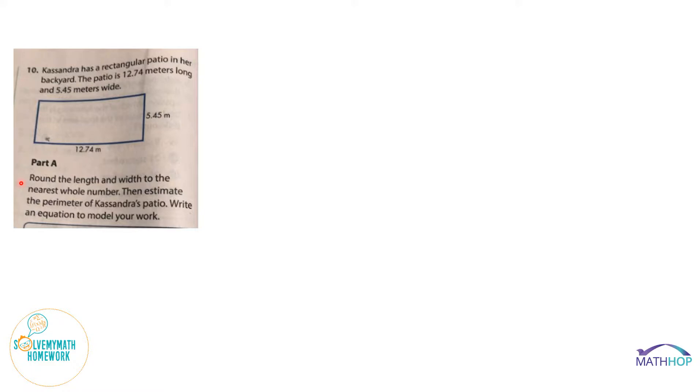So the key here is that we're finding an estimate for the perimeter. We're doing that because as soon as you round values, as soon as you're not calculating what the actual value is given, what you're finding is an estimate. It asks us to round the length and width to the nearest whole number. That actually makes this problem much easier. But we do have to take that first step and round each of those values.